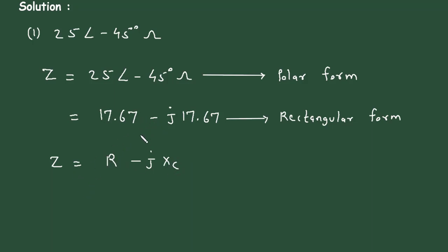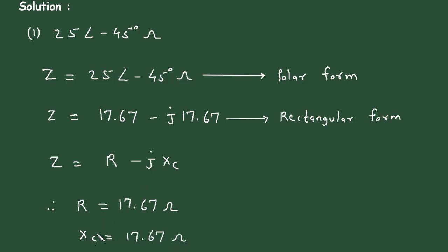If we compare this equation with our result, therefore R = 17.67 ohm. The unit of capacitive reactance is also ohm. Here this term is negative, so the value of XC will be 17.67, not minus 17.67. Remember this point.